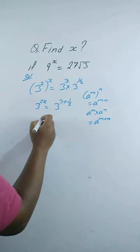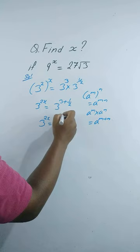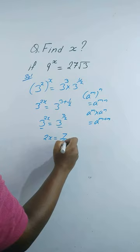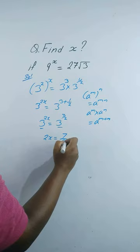This gives us 3 to the power 2x is equal to 3 to the power 7 by 2, since 3 plus 1 by 2 is 7 by 2. Since the bases are equal, therefore 2x is equal to 7 by 2. This gives x is equal to 7 by 2 times 1 by 2, which is x equals 7 by 4. This is your solution.